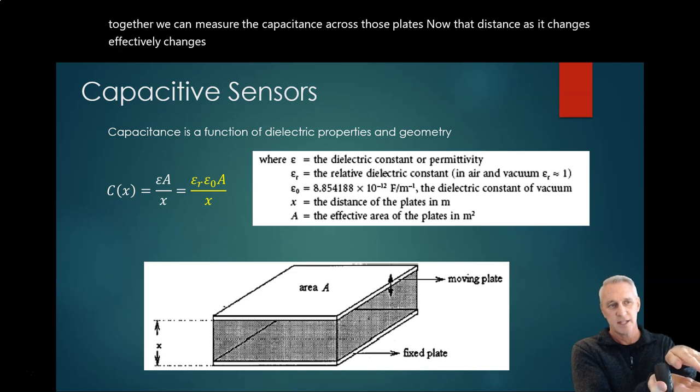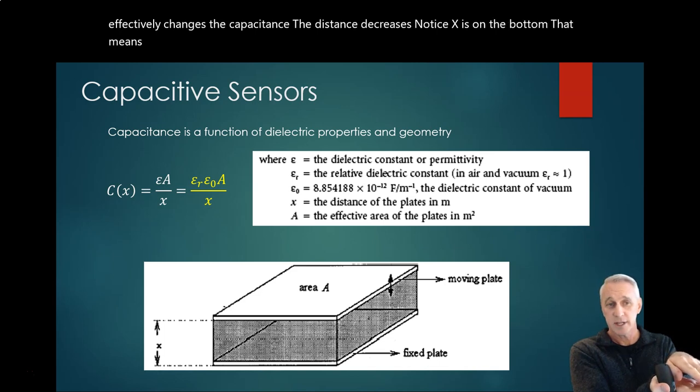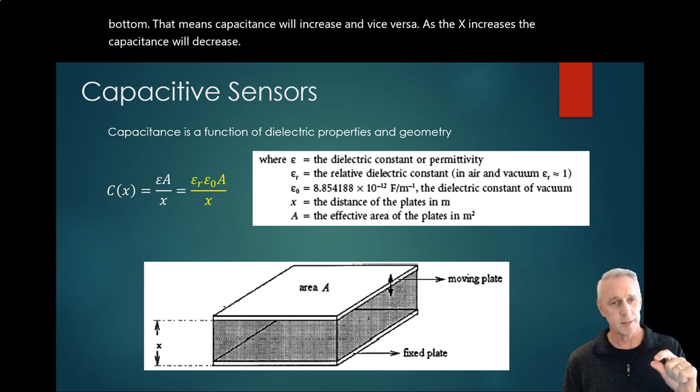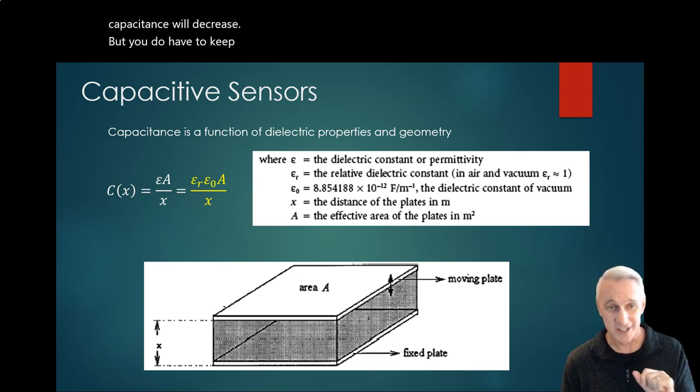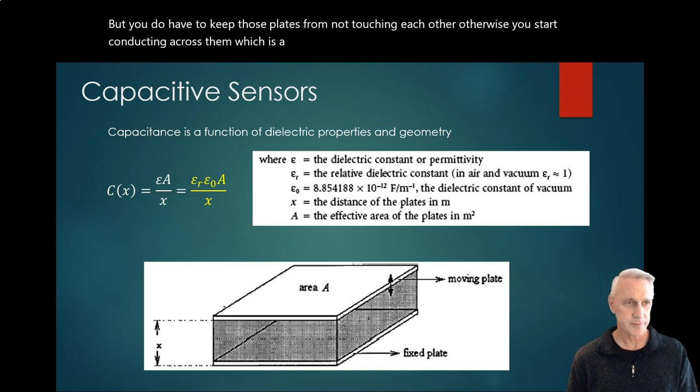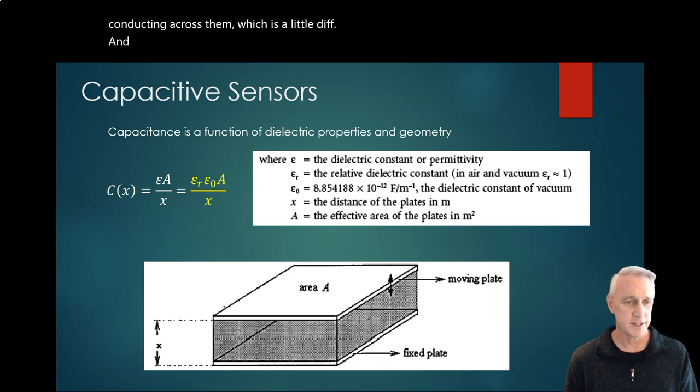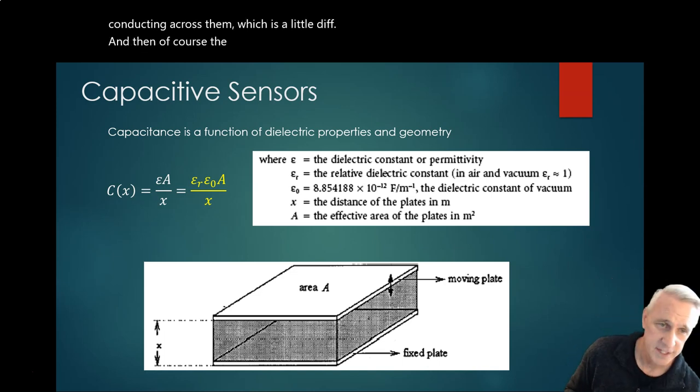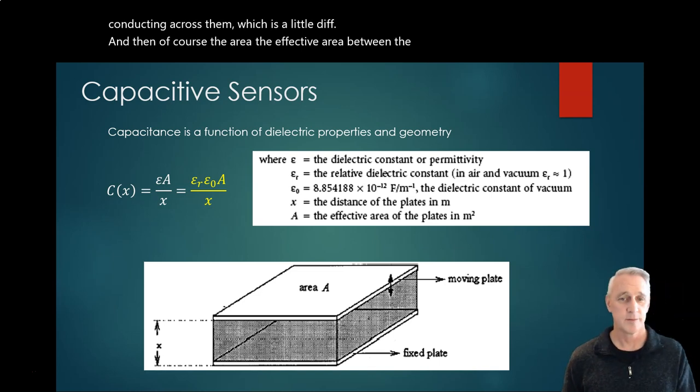Now that distance, as it changes, effectively changes the capacitance. As the distance decreases, notice x is on the bottom, that means capacitance will increase. And vice versa - as the x increases, the capacitance will decrease. But you do have to keep those plates from not touching each other, otherwise you start conducting across them, which is a little different.